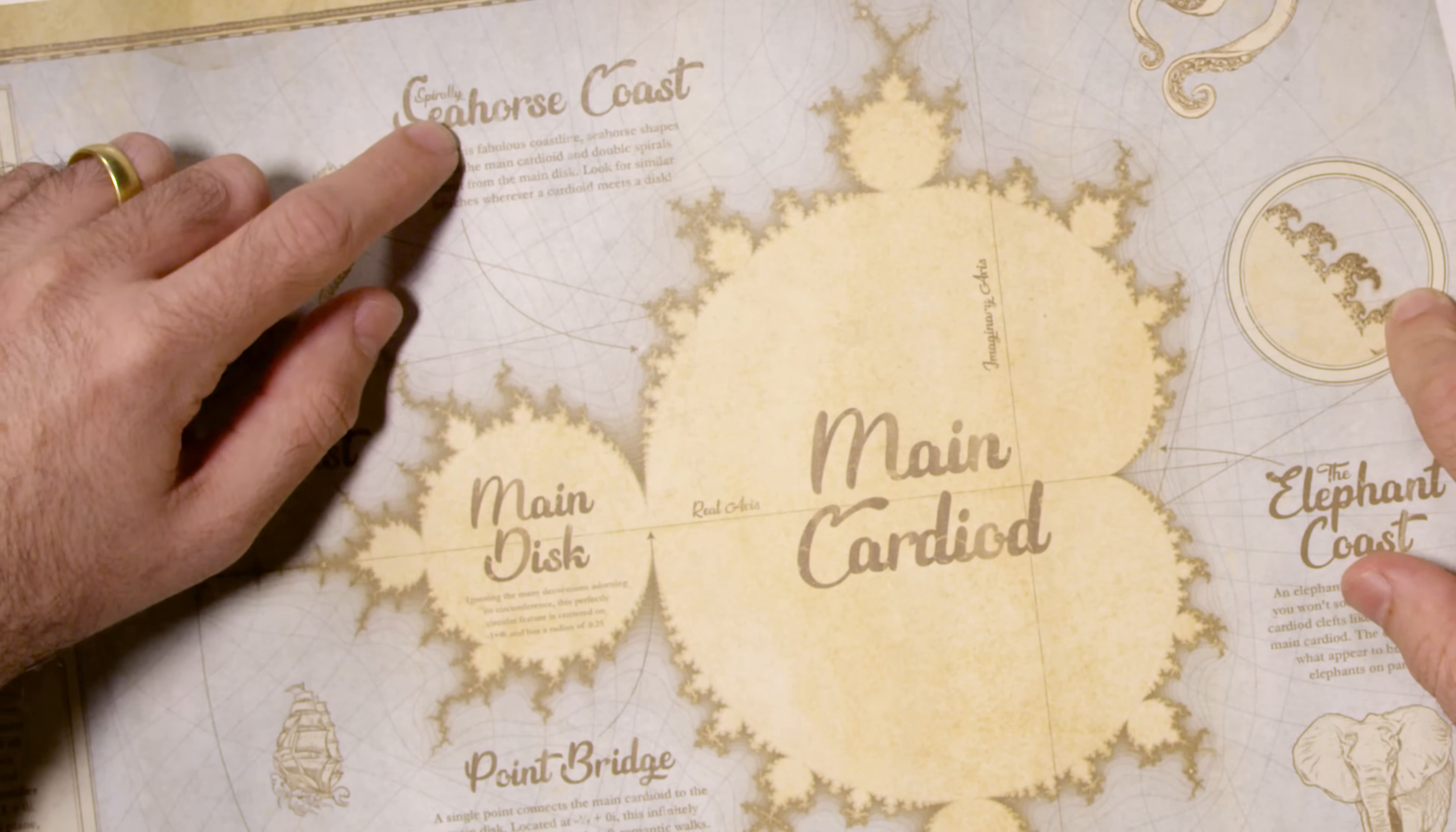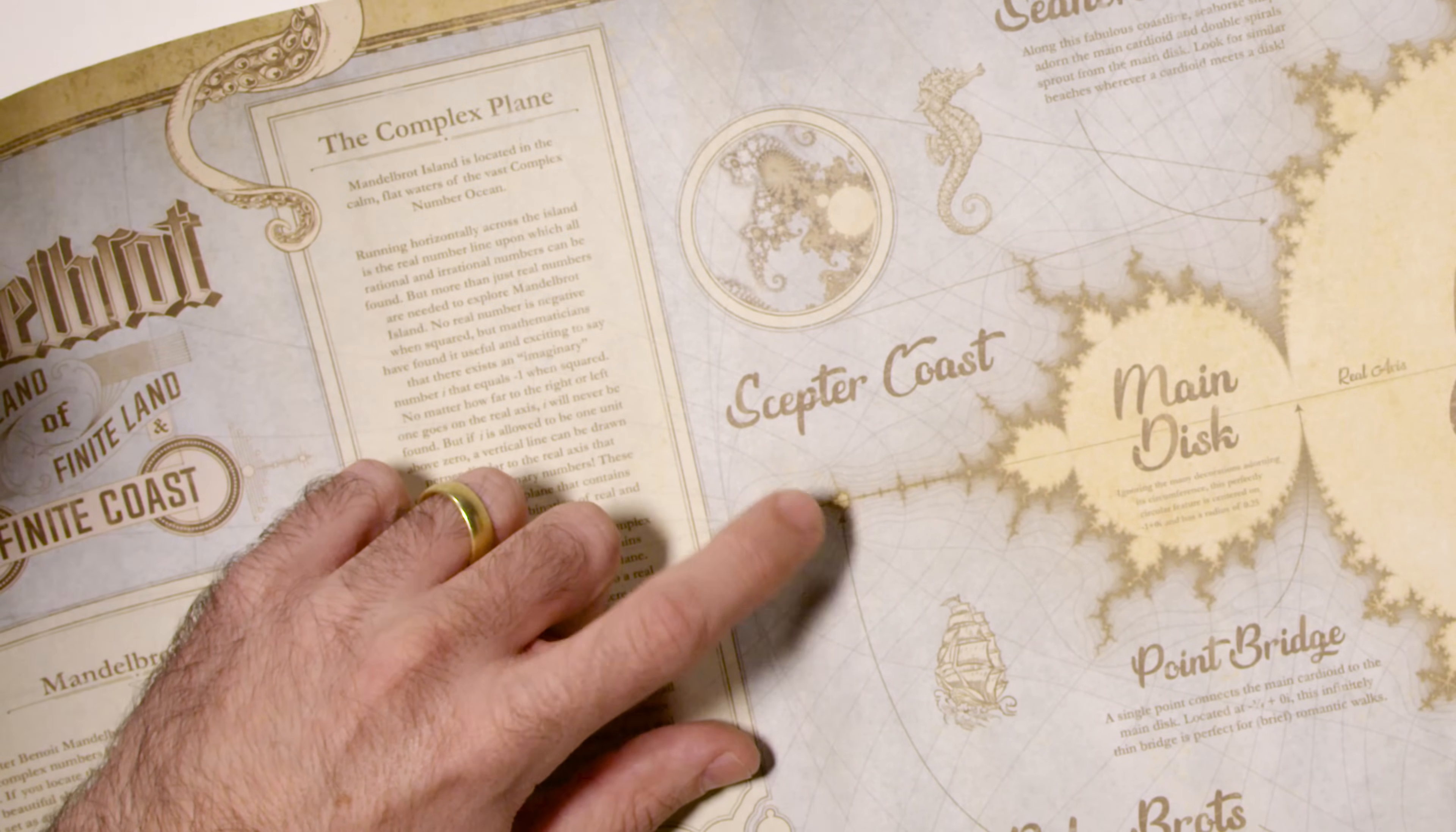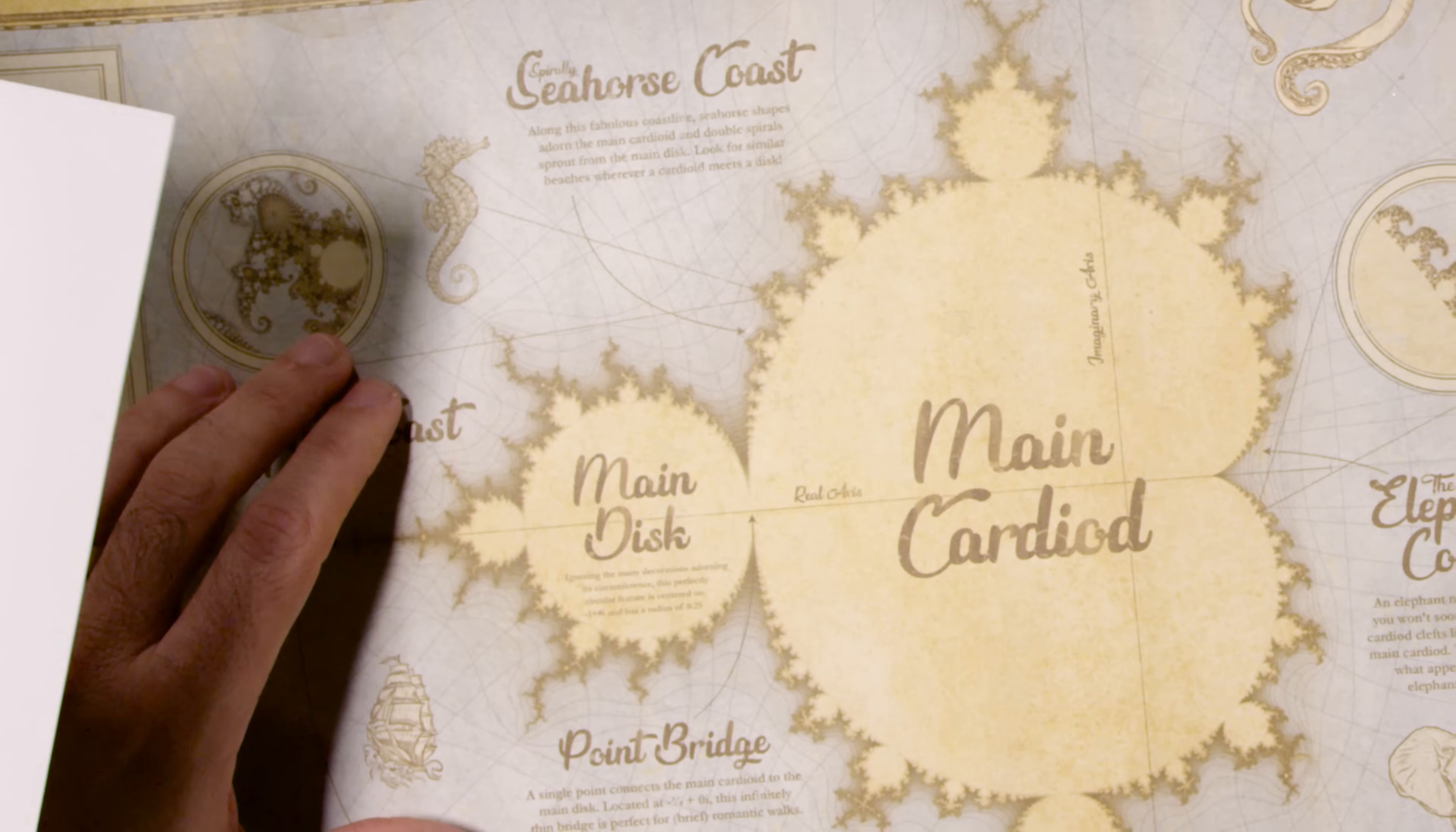We've got other things like the seahorse coast. Beautiful seahorse shapes adorn this side of the main cardioid. This is a cardioid, this wonderful heart shape. You can find cardioids all over. For instance, on some of the baby brats, the baby brats are very similar looking to the entire Mandelbrot set. The main disc, we talked about that. But on the seahorse coast side, we also have this main disc spiral coastline. It's a beautiful place. I really wish it was real.